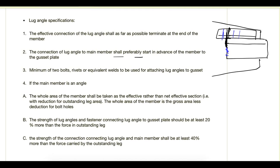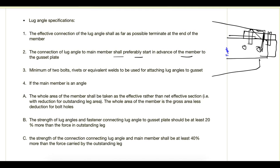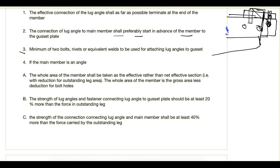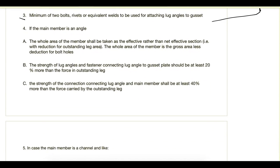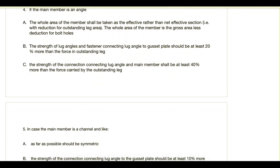The second provision states that the connection of the lug angle to the main member shall preferably start in advance of the member to the gusset plate. This means the connection between the lug angle and the main plate should begin before the connection between the gusset plate and the main plate starts. The third provision requires a minimum of two bolts, rivets, or equivalent weld to be used.